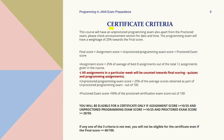The criteria for receiving a certificate in the NPTEL programming in Java course are as follows. Your final score is calculated by adding scores from the assignments, Unproctored Programming Exam, and Proctored Exam. To be eligible for a certificate, you must score at least 10 out of 25 on the assignments, 10 out of 25 on the Unproctored Programming Exam, and 20 out of 50 on the Proctored Exam. Even if your final score is 40 out of 100 or more, you will not receive a certificate if you fail to meet any one of these criteria.